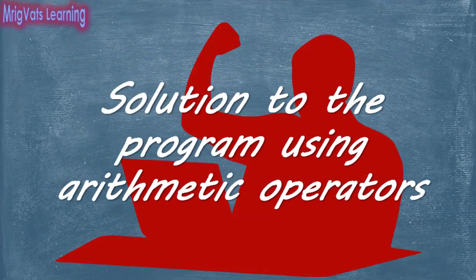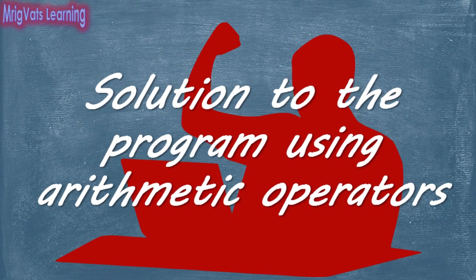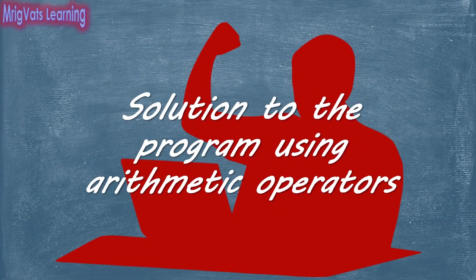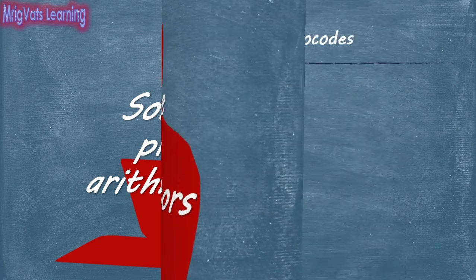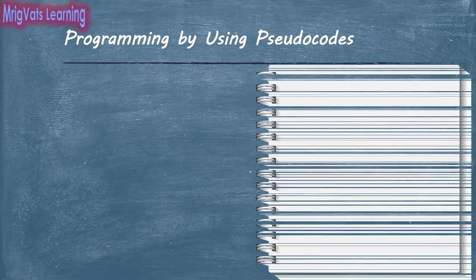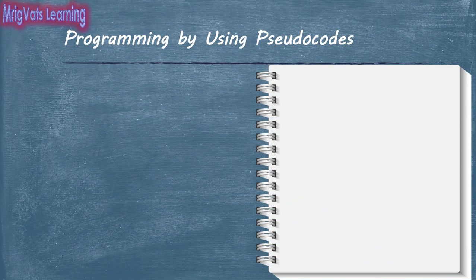In the last video, I had requested you to create a program to display the area of a rectangle, perimeter of a rectangle, area of a triangle, and how disproportionate the two sides are, after accepting two sides from the user. I hope you have created the program. Here is the solution to the problem statement that you can use to compare with your program.